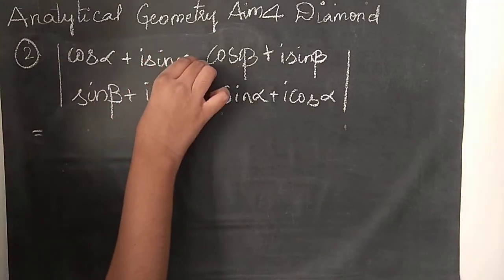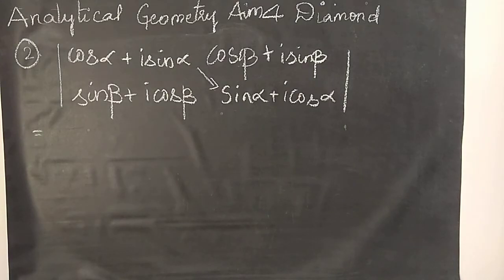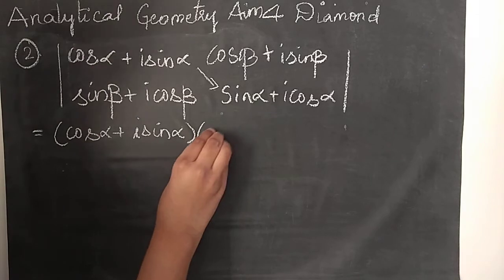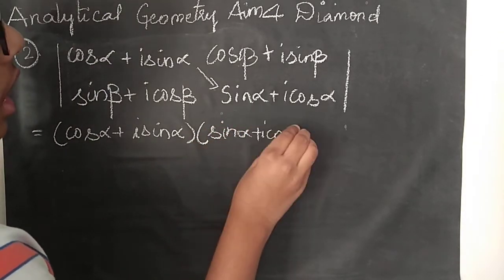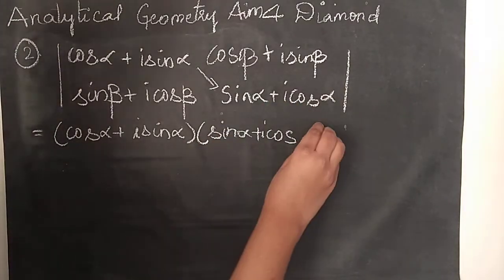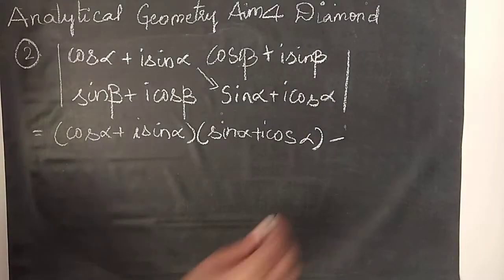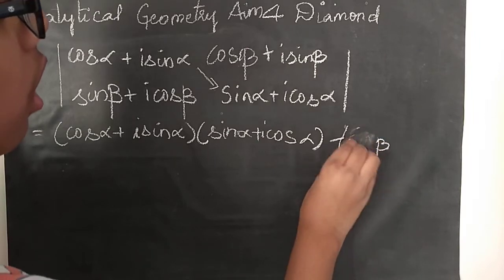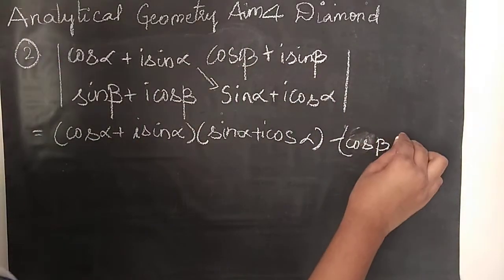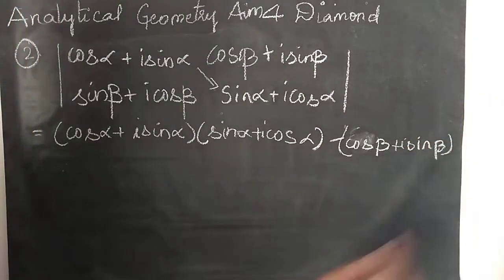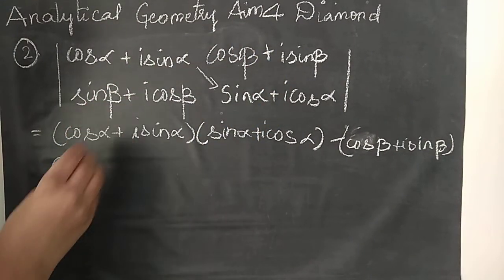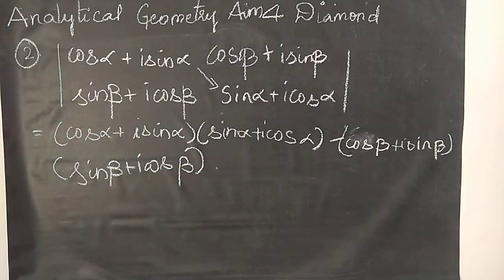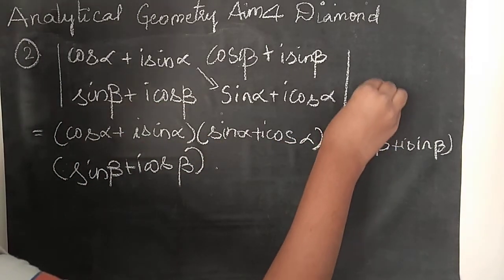So how to do this? First cross multiply. We will apply AD minus BC. So AD is: cos alpha plus i sine alpha into sin alpha plus i cos alpha. Minus BC: sin beta plus i cos beta into cos beta plus i sine beta. This gives us our AD minus BC.